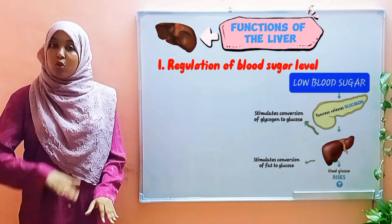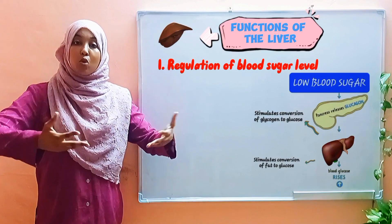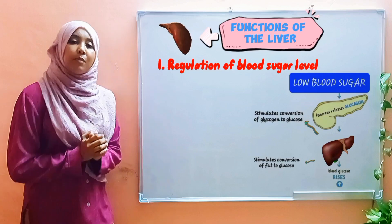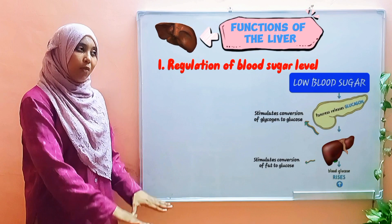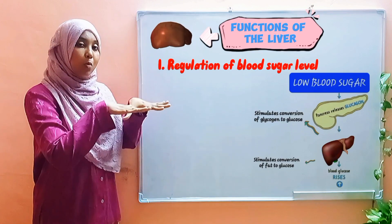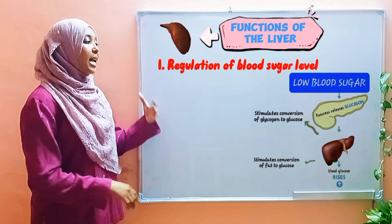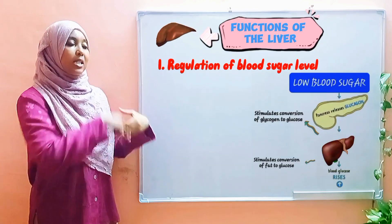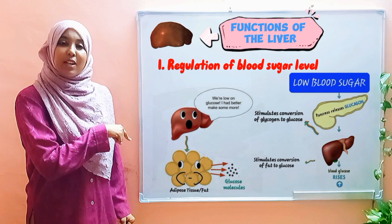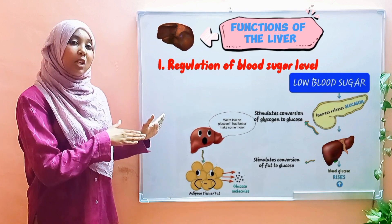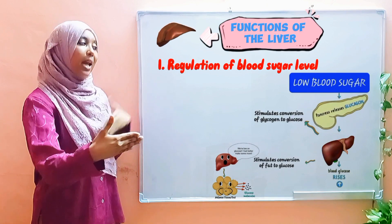Glucagon needs to ensure that the amount of glucose within the blood goes back up to normal, so that your cells can use the glucose to produce energy. How does glucagon — a hormone — ensure that blood sugar levels rise back up to normal? It initiates a series of steps. Number one: it converts glycogen and fats to glucose. This is the reverse of what happened with insulin — in the case of insulin, we were converting excess glucose into glycogen and fats for storage.